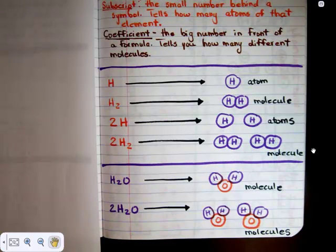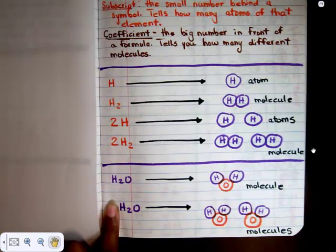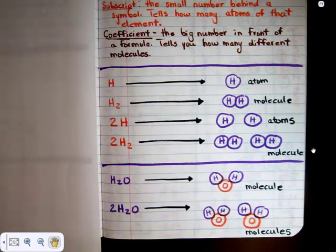If we put the coefficient two in front of it, that means you need two H2Os, and so you would have two molecules of water.